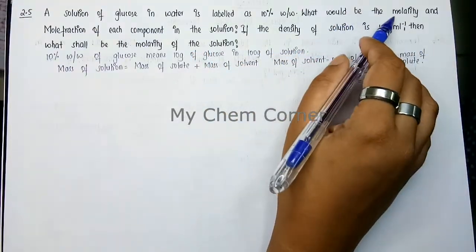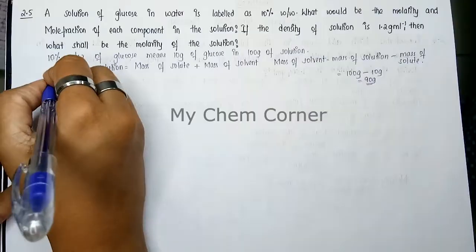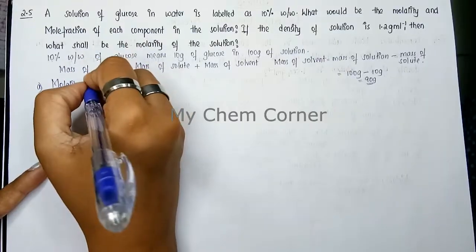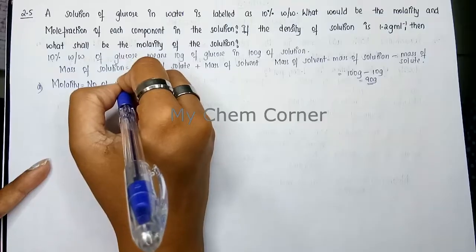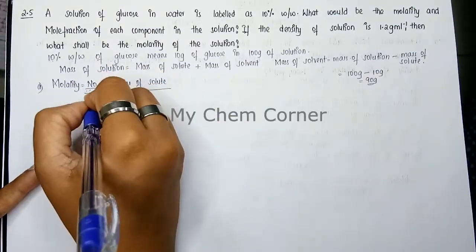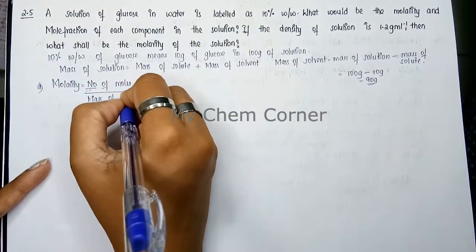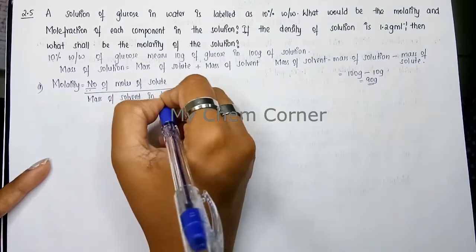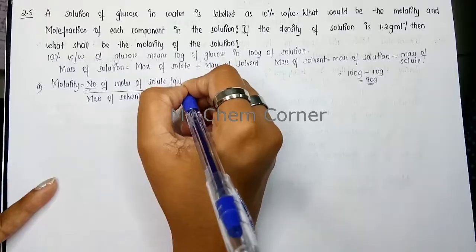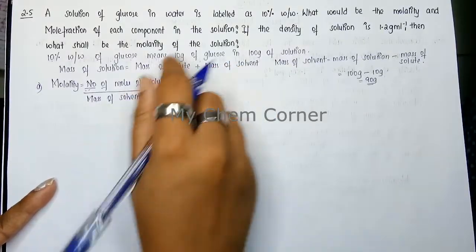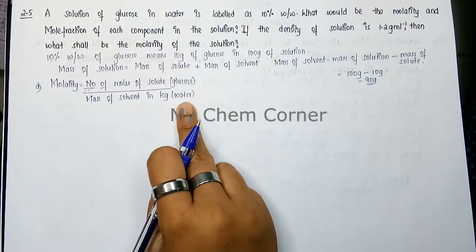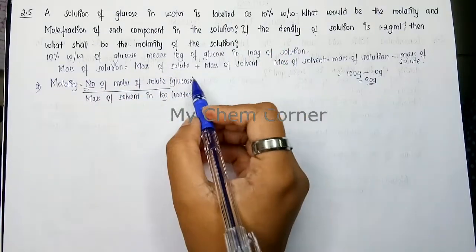Now let's start calculating. The first question is molality. The formula for molality equals number of moles of solute divided by mass of solvent in kg. The solute here is glucose and the solvent is water. Number of moles of solute is not given — we need to calculate it. Mass of solvent we have, but it's in grams, so we'll convert it to kg.